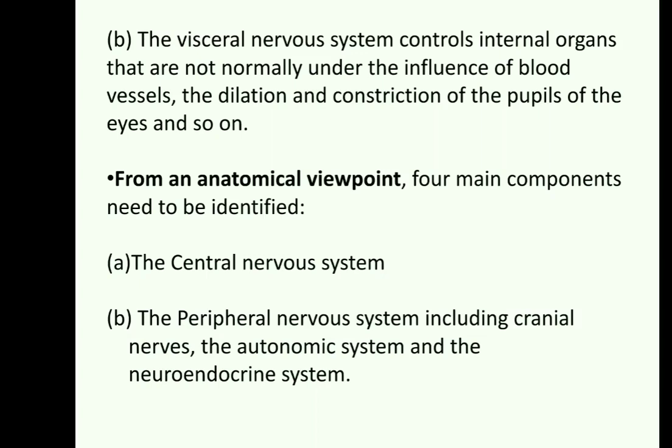If we consider the anatomical viewpoint, the main components of the nervous system are the central nervous system and the peripheral nervous system. In subsequent slides, we will understand what parts deal with the central nervous system and how the peripheral nervous system consists of cranial nerves, the autonomic system, and the neuroendocrine system.